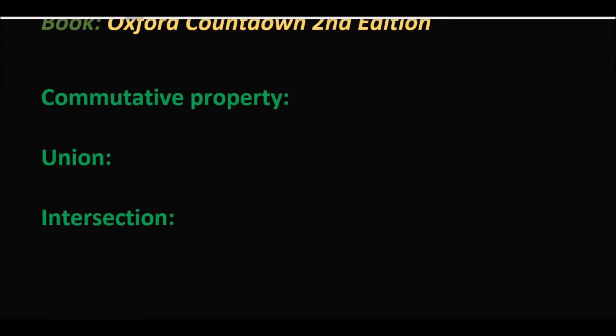सबसे पहले हम दो main properties discuss करेंगे जिसमें Commutative Property और Associative Property है। तो सबसे पहले हम Union की Commutative Property discuss करेंगे। Commutative property में Union की property होती है: A union B is equals to B union A — यानि आप A union B लो और B union A लो, उन दोनों का answer हमेशा same आता है।